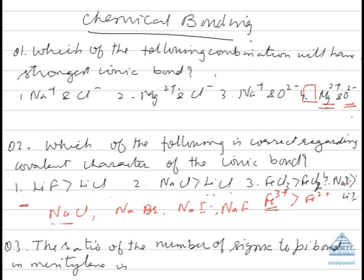Sodium iodide and sodium fluoride — acetone is an organic solvent, so whichever has greater covalent character will be soluble in acetone. Among chloride, bromide, fluoride, and iodide, iodide has the largest size. Since the cation is the same, covalent character depends on the size of the anion. Iodide has a larger size, so sodium iodide will have greater covalent character and will be soluble in acetone.